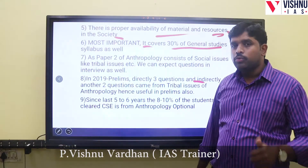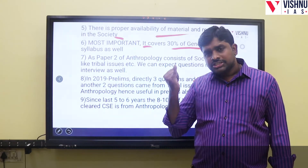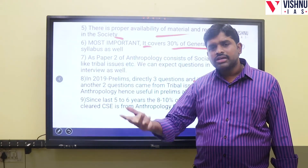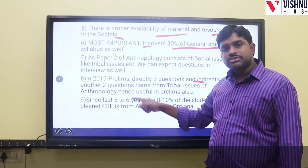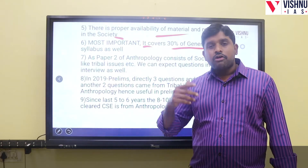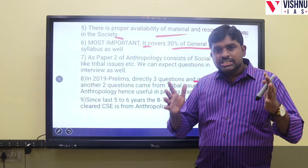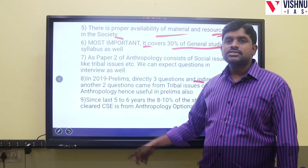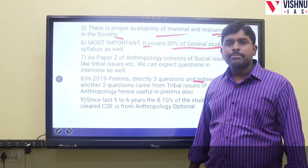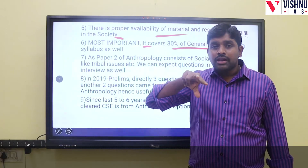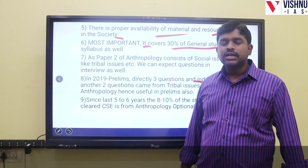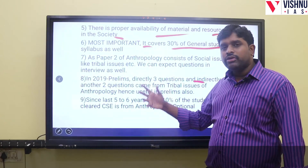GS1 is divided into history, Indian society, and geography. Indian society questions — covering culture, civilization, secularism, and regionalism — are present in Paper 2 of anthropology. GS2 covers good governance and international relations; governance topics like the Forest Rights Act and Panchayati Raj are discussed in anthropology Paper 2. GS3 covers economics, disaster management, and internal security — including left-wing extremism and the triangle between police, Naxalites, and tribal populations — which is discussed in Paper 2.